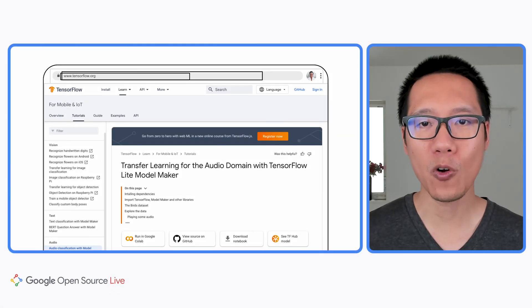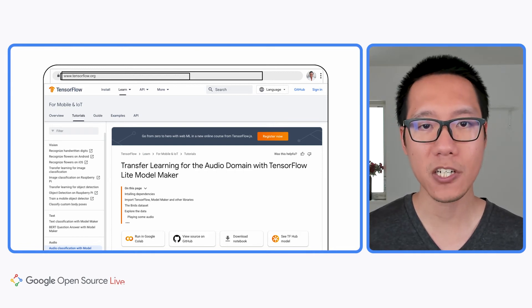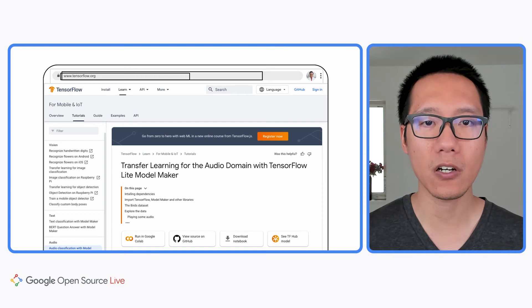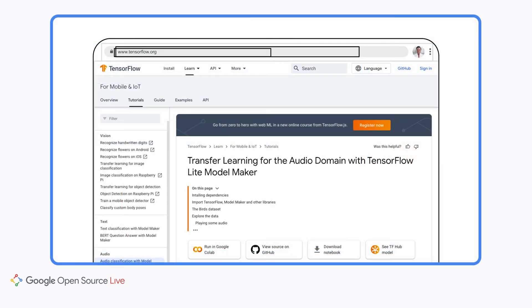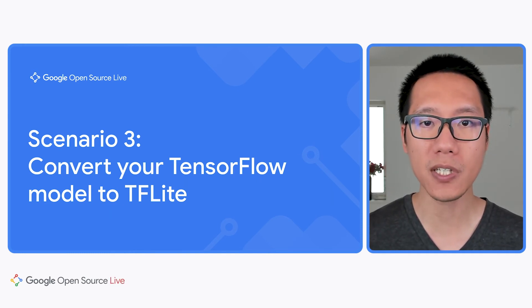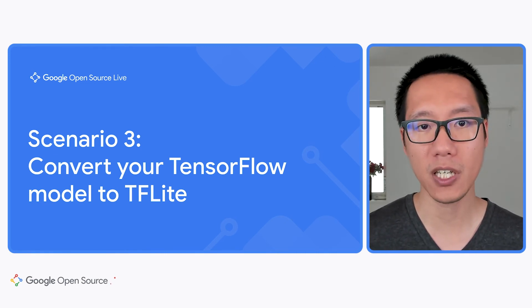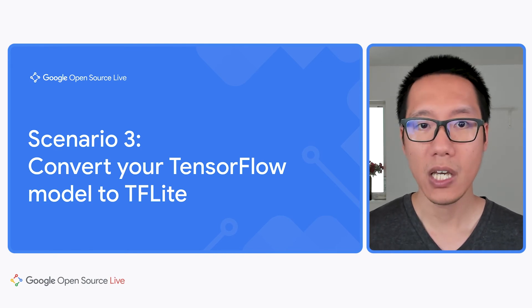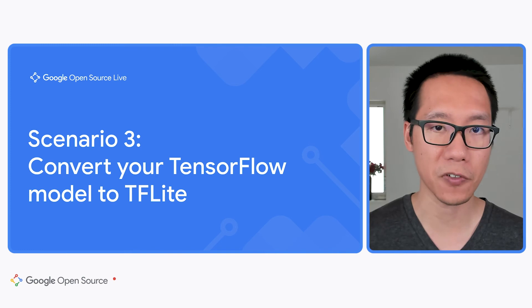You can also use Model Maker to train many other types of custom models, such as image classification, audio classification, or text classification. If you want to learn more, check out the tutorials on the TensorFlow Lite website — links are in the video description. Model Maker is a very easy-to-use tool, but it only supports a specific set of popular use cases and model architectures. If you need an unsupported use case, you can build and train a custom model using TensorFlow and then convert it to TensorFlow Lite.